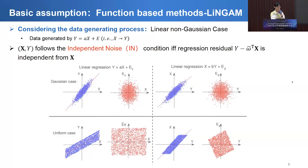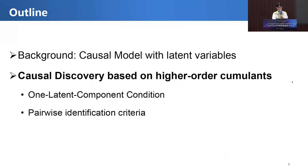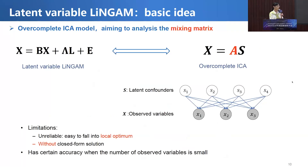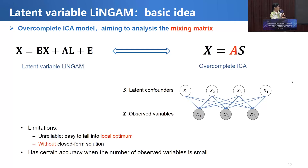This approach can only be used for causal discovery without latent variables. So if there are latent variables, how can we solve the causal discovery problem? Based on the LiNGAM model, researchers have proposed a typical model named latent variable LiNGAM. LiNGAM means linear non-Gaussian acyclic model. This model can be formalized as follows: X is the observed variable, L is the latent variables, E is the noise term, and B and lambda are two matrices representing the correlations.